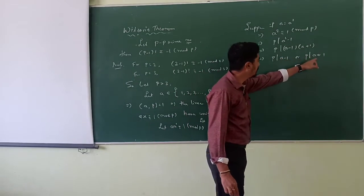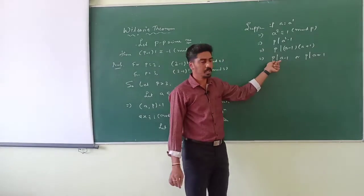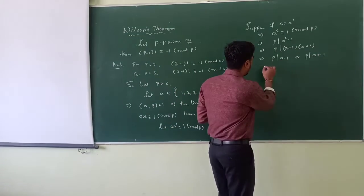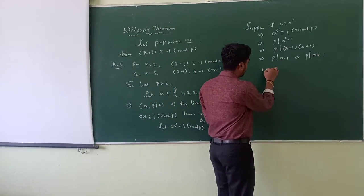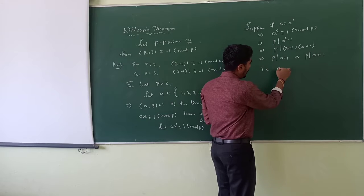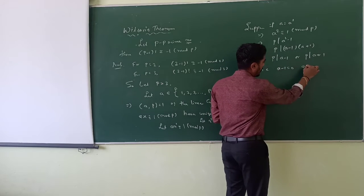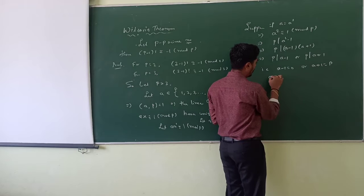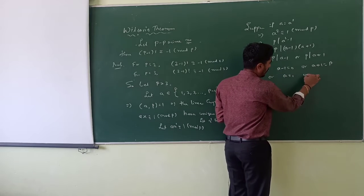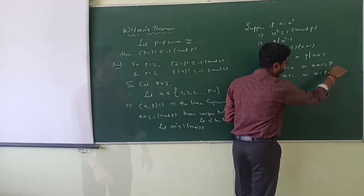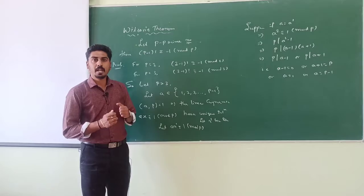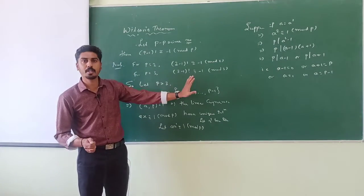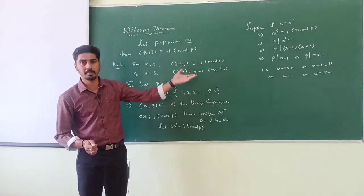Since we have two integers, one factor must be 0 and the other must equal p. That is, a minus 1 should equal 0, or a plus 1 should equal p — meaning a equals 1 or a equals p minus 1. So we have shown that a will equal a' only if a equals 1 or a equals p minus 1.